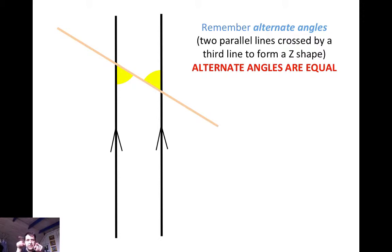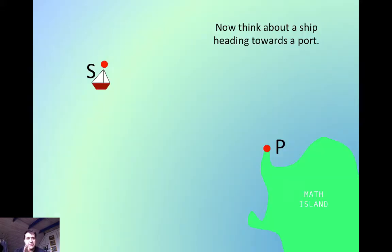The angles inside the Z-shape are equal. You've got two parallel lines and then a third line that crosses them, making a Z-shape that you can see on the screen. The angles inside the Z are called alternate angles and they're equal to each other.